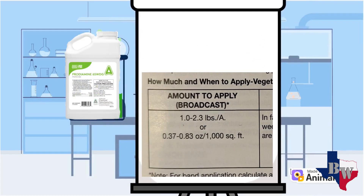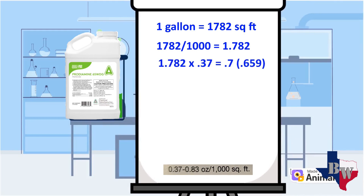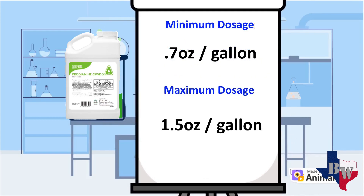If you look on the side of the prodiamine jug, which is our sample product, it says the dosage rate is 1 to 2.3 pounds per acre, or 0.37 to 0.83 ounces per 1,000 square feet. Now, that ounces is weight, not liquid. But since we already figured out our spray area is 1 gallon for 17,820 square feet, if we take 17,820 divided by 1,000 that gives us 1.782. If we multiply that times the low dosage of 0.37, that gives us 0.659, rounded up to 0.7. If we multiply 1.782 times 0.83, that gives us 1.47, rounded up to 1.5. So now we know the minimum dosage is 0.7 ounces per gallon and the maximum dosage is 1.5 ounces per gallon.